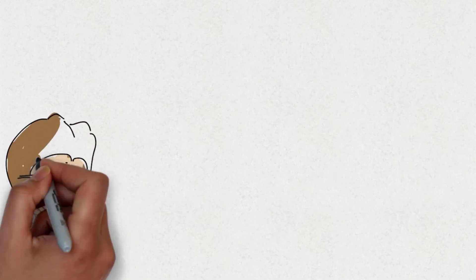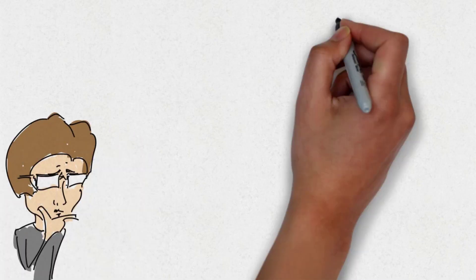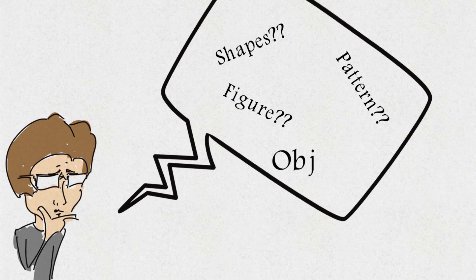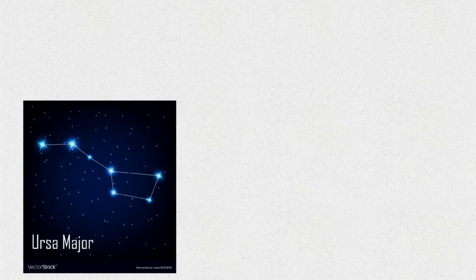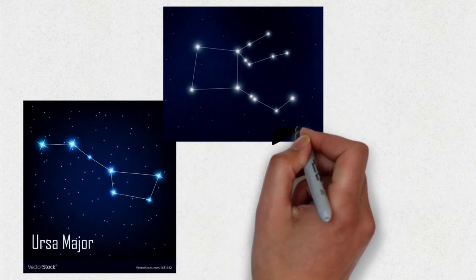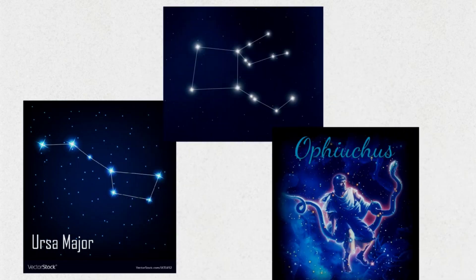We humans are creative, imaginative and curious. We always ask for shapes, figures, patterns and objects in everything we see. Even in stars we made some simple, complex and highly complex shapes and figures.